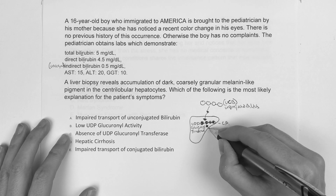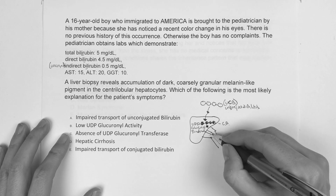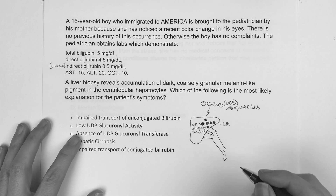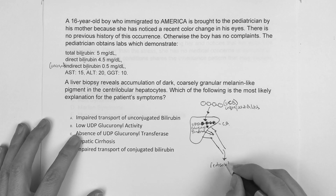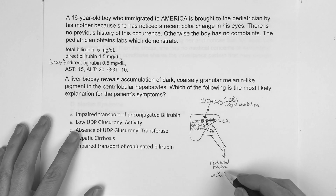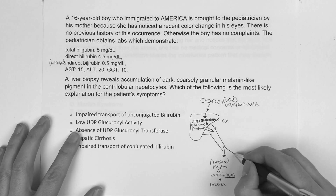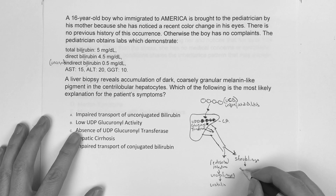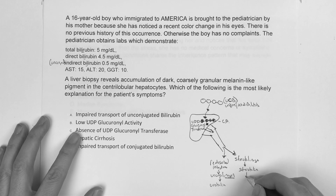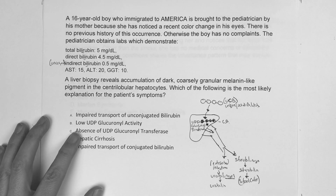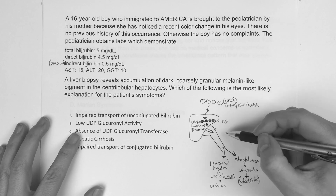The conjugated bilirubin transfers and moves through the rest of the liver, then comes out through the biliary tract. It goes down and gets reabsorbed in the intestines, forming urobilinogen to make urobilin, or sterobilinogen makes sterobilin — which is essentially the stool color. That's the normal pathway of how this works.